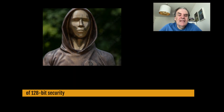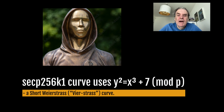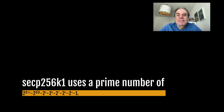Satoshi Nakamoto selected the secp256k1 curve for Bitcoin, which gives an equivalence of 128-bit security. As we've seen, it takes a lot of energy to be able to crack that size of security. The secp256k1 curve uses the mapping of y² = x³ + 7 mod p and is known as a short Weierstrass curve. The prime number used in secp256k1 is 2²⁵⁶ − 2³² − 2⁹ − 2⁸ − 2⁷ − 2⁶ − 2⁴ − 1.